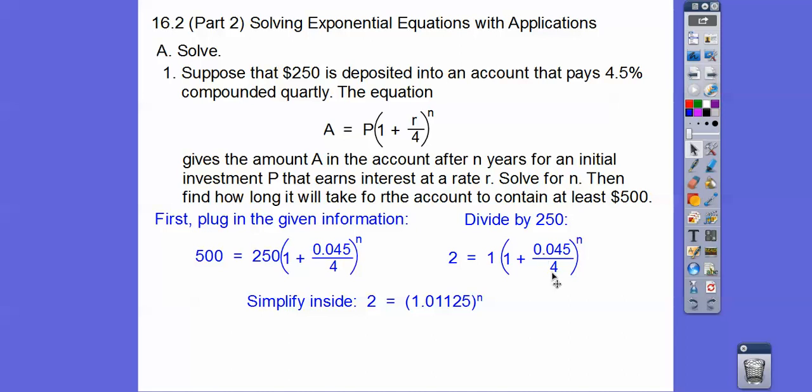Simplify the inside. This divided by this is 0.01125. So when we add one, we get 1.01125.